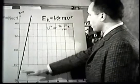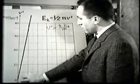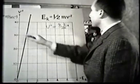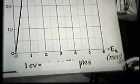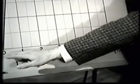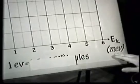Here, we have plotted this Newtonian relationship for electrons. This straight line represents velocity squared compared to kinetic energy. Because of the energies we have available in this laboratory, we have plotted kinetic energy along the horizontal axis in units of millions of electron volts.